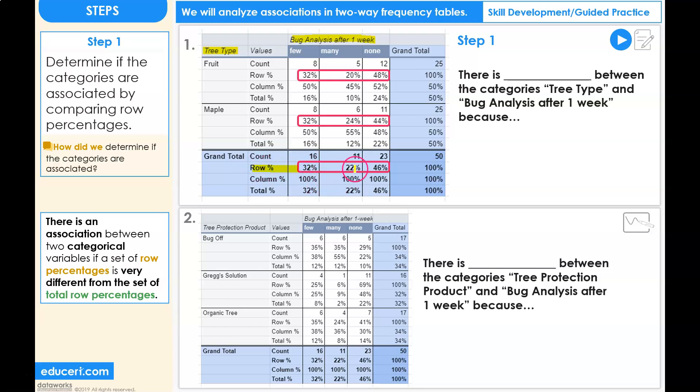32%, 22%, and 46%. If we compare this total row to the row percentages for the fruit tree type, we get 32 and 32, 20 and 22, 48 and 46. These percentages are very close to each other.